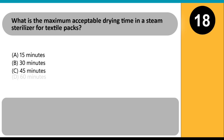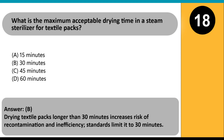What is the maximum acceptable drying time in a steam sterilizer for textile packs? A. 15 minutes. B. 30 minutes. C. 45 minutes. D. 60 minutes. Answer: B. Drying textile packs longer than 30 minutes increases risk of recontamination and inefficiency. Standards limit it to 30 minutes.